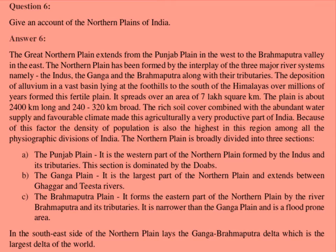The northern plain is broadly divided into three sections. First, the Punjab Plain — the western part, formed by the Indus and its tributaries, dominated by the Doabs. Second, the Ganga Plain — the largest part, extending between the Ghaggar and Tista rivers. Third, the Brahmaputra Plain — the eastern part formed by the Brahmaputra and its tributaries; it is narrower than the Ganga Plain and is a flood-prone area. In the south-east of the northern plain lies the Ganga-Brahmaputra Delta, which is the largest delta in the world.